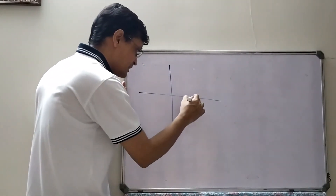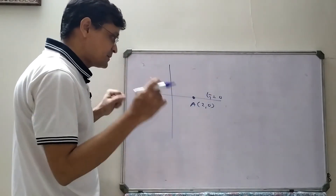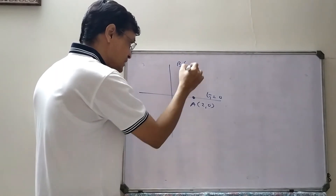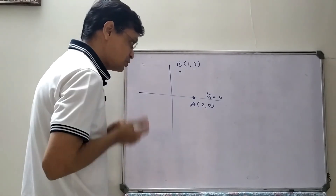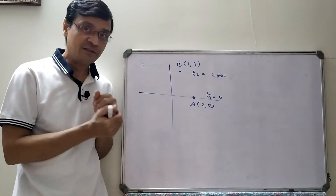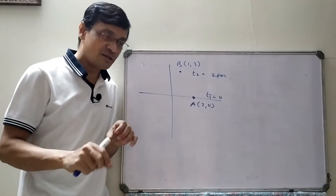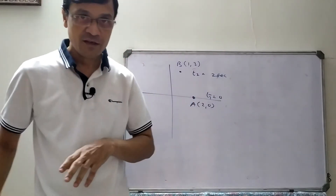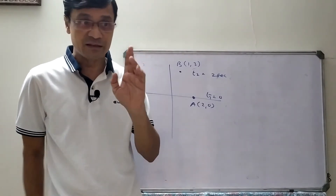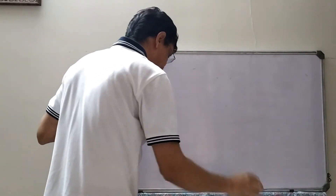Now, on an X-axis with markings at 0, 40, 80... up to 360 meters and negative side -40, -80, etc., an object starts at origin at t=0. Suppose it moves to position (1,3) after t=2 seconds. Since the object moved in a straight line, distance and displacement are both equal in this case.